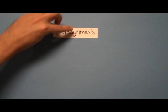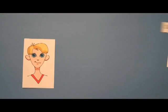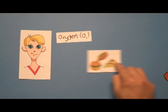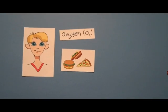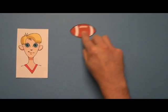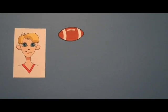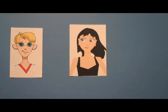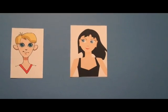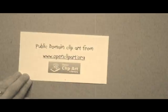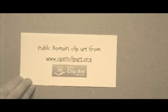So photosynthesis takes care of Bob's oxygen. His mom takes care of his food. So that leaves him more time to focus on more important matters, like football — and his newest interest, Felicia. He is in junior high after all, and there are more important things to worry about. He is very bright.